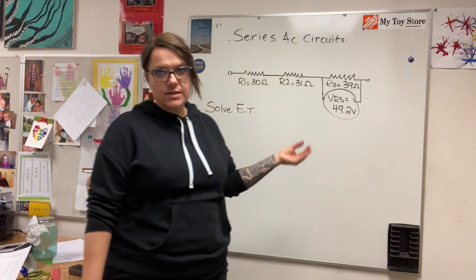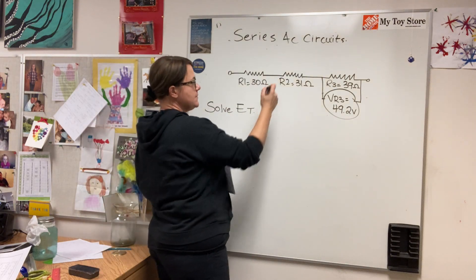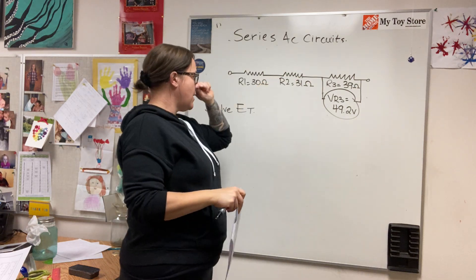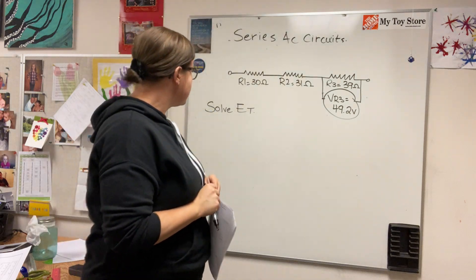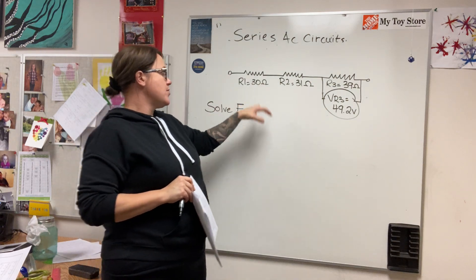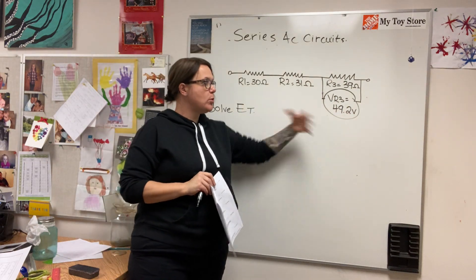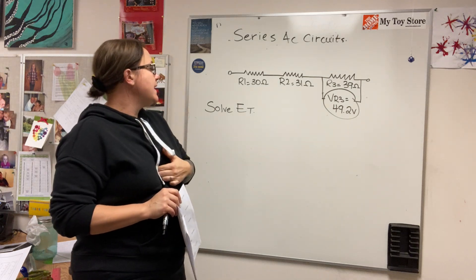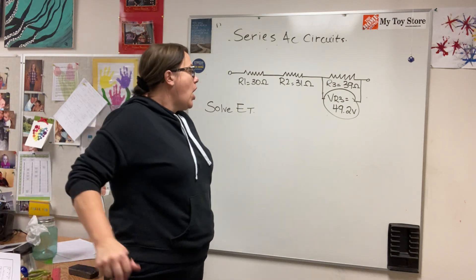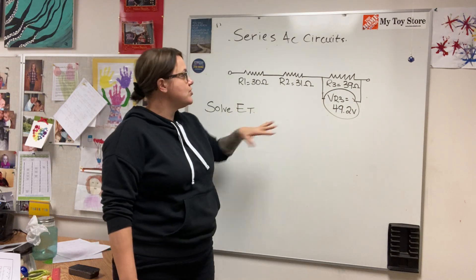I have an example here on the board: three resistors, three in-phase loads connected in series with each other. I know they're in series because they are tip to tail. I'm asked to find the overall supply voltage. Resistor one is 30 ohms, resistor two is 31 ohms, resistor three is 39 ohms, and I'm given the volt drop across the third resistor. I need to find the applied voltage.